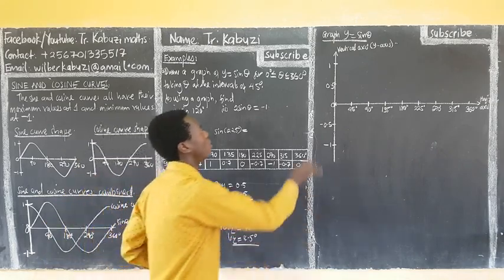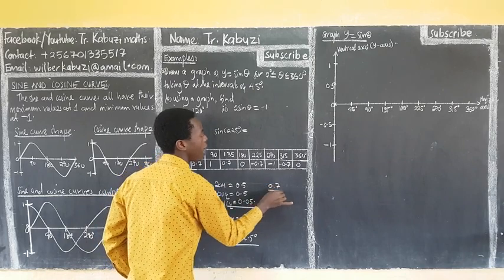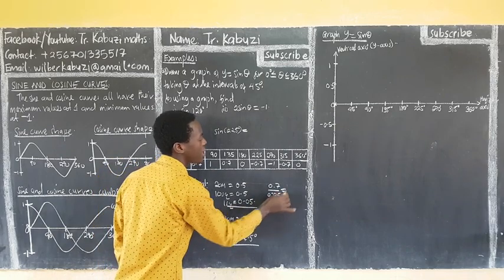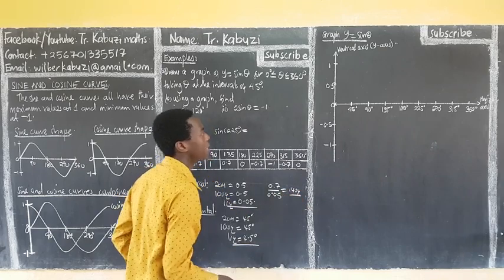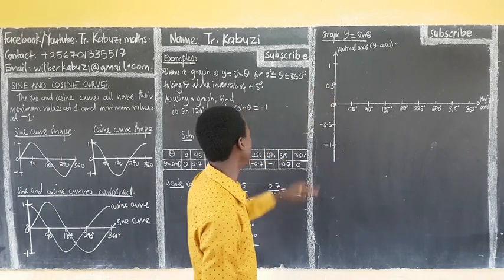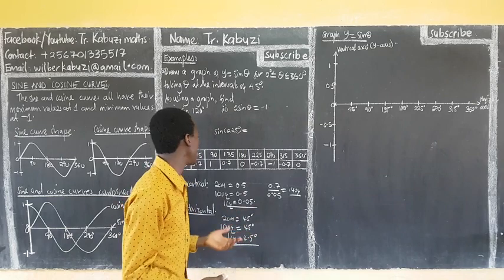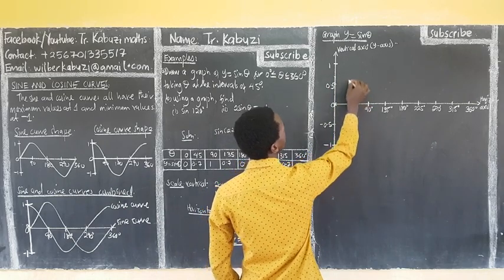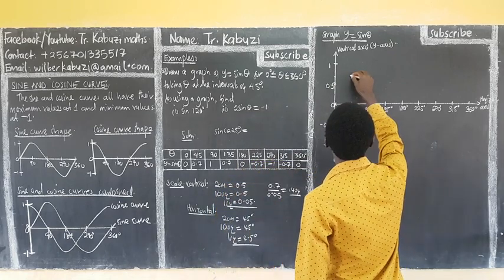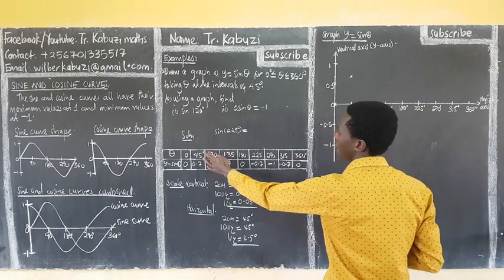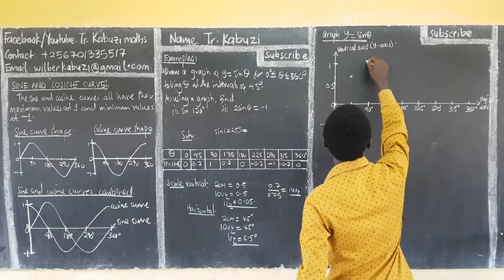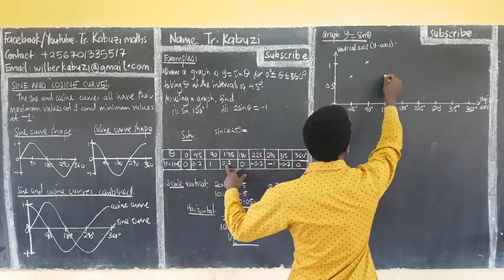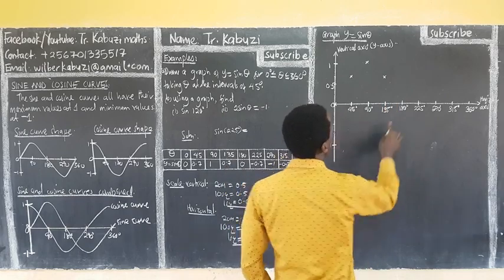How do you get 0.7 on the graph? You take 0.7 and divide by what each small square represents on the vertical — that's 0.05. The calculation gives you 14 small squares. So from the origin, count 14 small squares up; that's where 0.7 is going to be. That's how important it is. Then count along to 90 — 90 goes with 1, which is at the top.